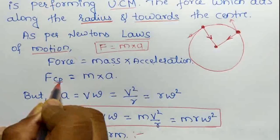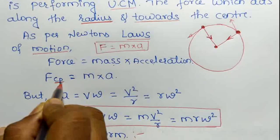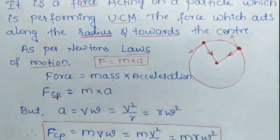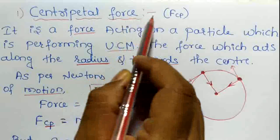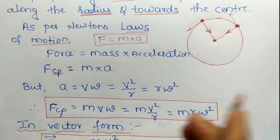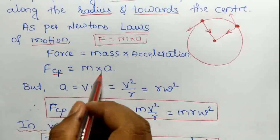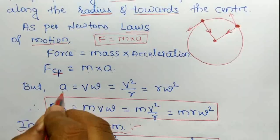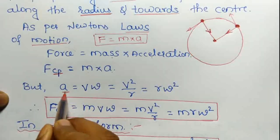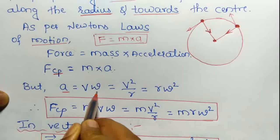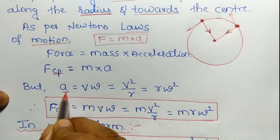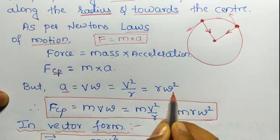FCP is equal to mass into acceleration. We already discussed the derivation for radial acceleration: acceleration equals V times omega. Another formula: acceleration equals V squared upon R. Another formula: acceleration equals R times omega squared, where V is linear velocity, omega is angular velocity, and R is radius.